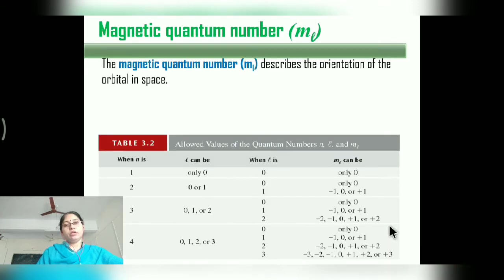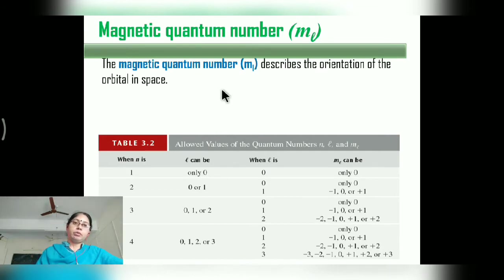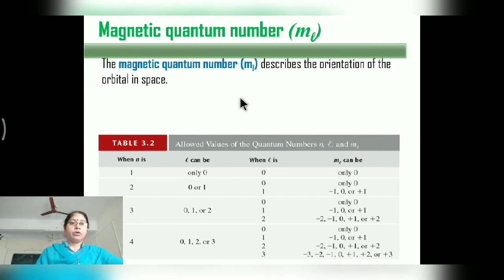Now let us see the Magnetic Quantum Number. The magnetic quantum number ml describes the orientation of the orbit in space — that is, how the electron's orientation in the orbit is occurring.